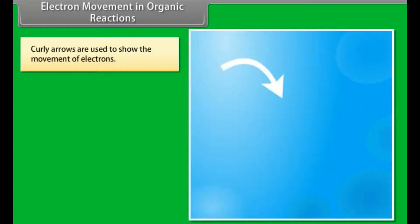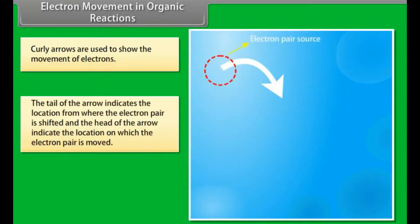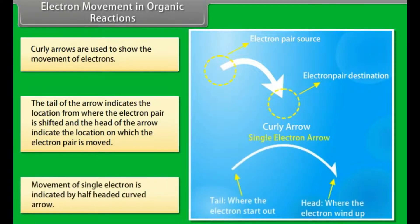Electron movement in organic reactions. Curly arrows are used to show the movement of electrons. The tail of the arrow indicates the location from where the electron pair is shifted, and the head of the arrow indicates the location to which the electron pair is moved. Movement of a single electron is indicated by a half-headed curved arrow.